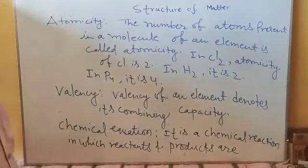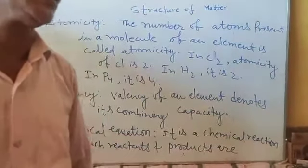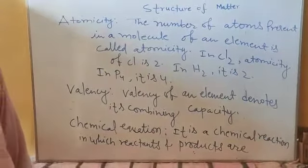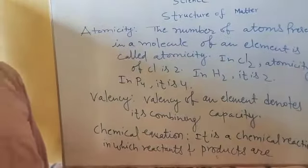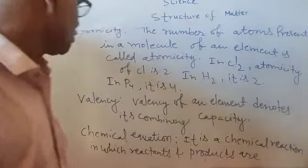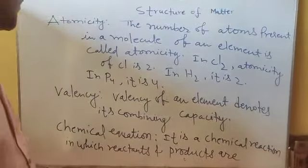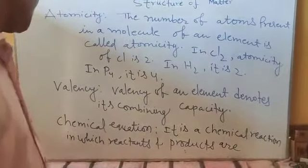Different elements have different valency. For example, the valency of hydrogen is 1, valency of magnesium is 2, valency of aluminium is 3, valency of carbon is 4, valency of nitrogen is 3. So different elements have different valency. It is the combining capacity of an element.